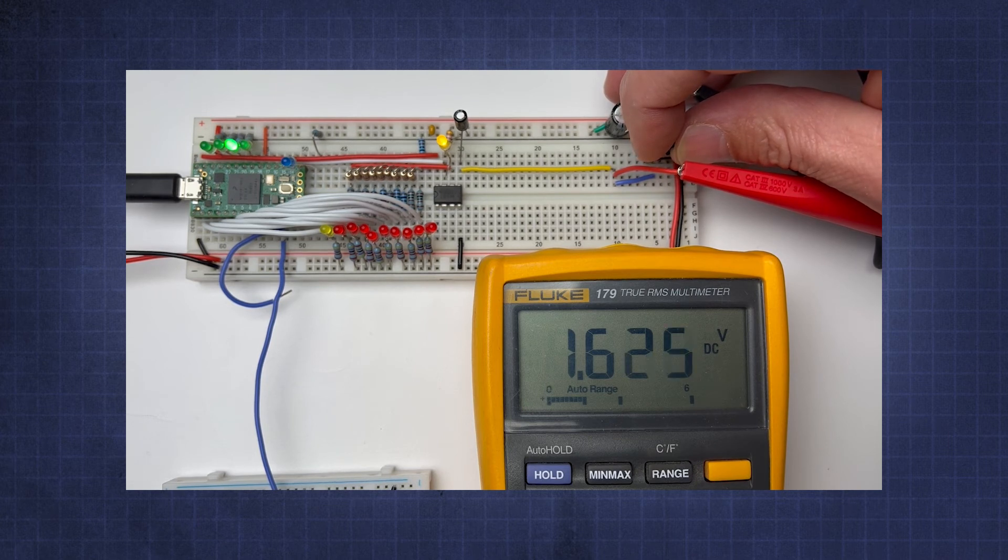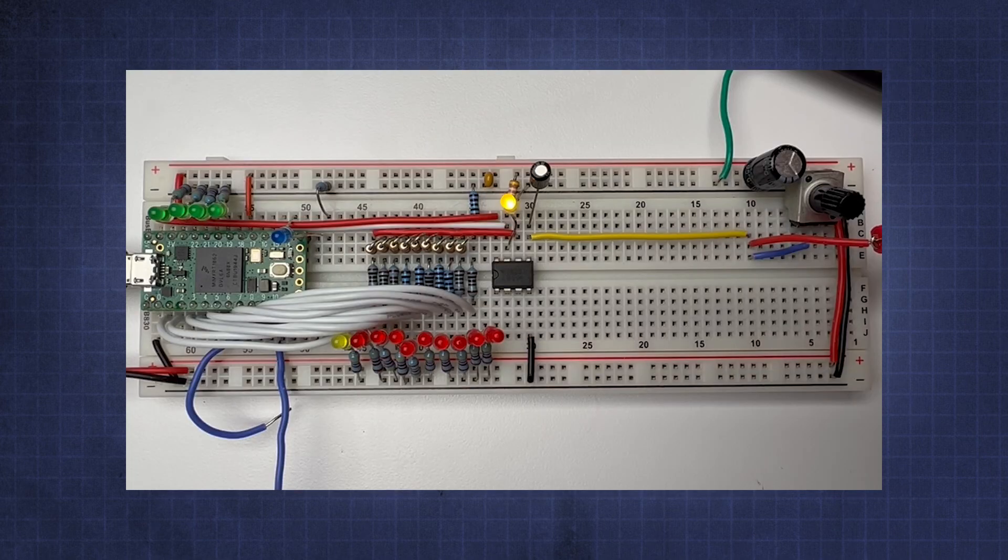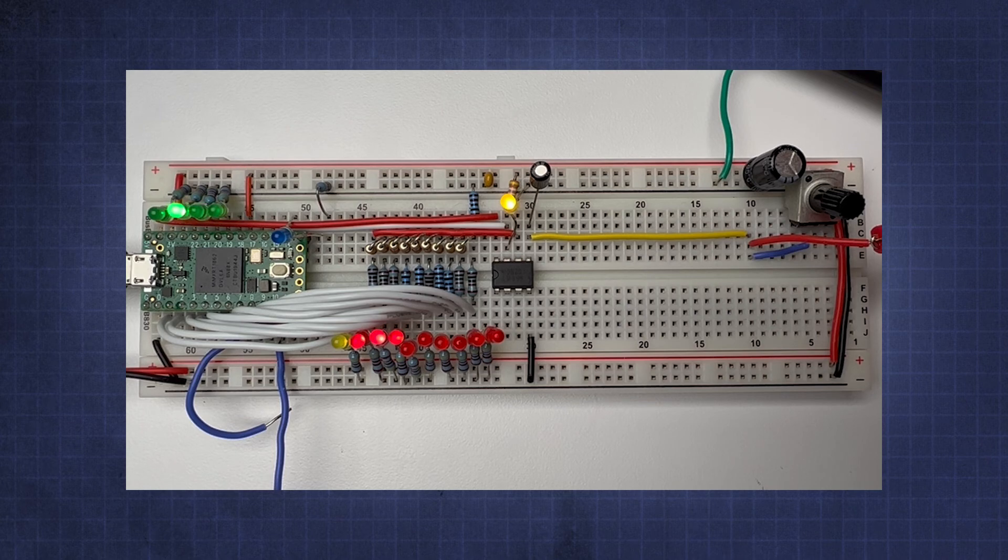Measuring with the DMM, we dial in 1.625 volts on the analog input, and can start a conversion stepping down all 10 bits and see if the result is in line with what we expect.